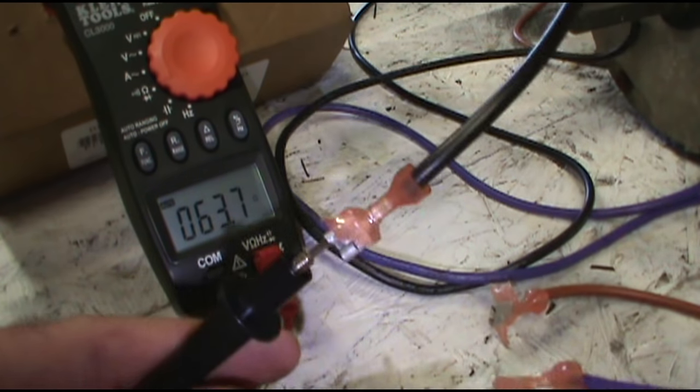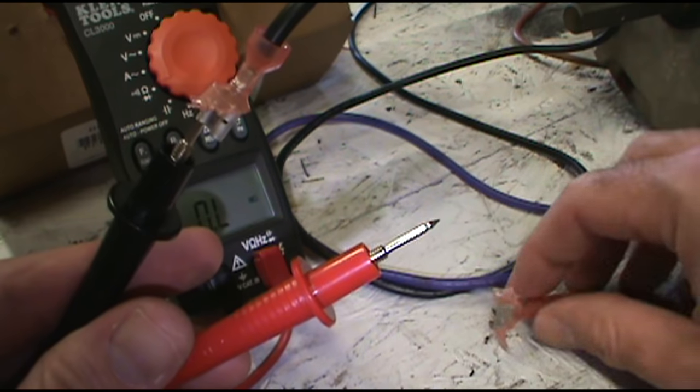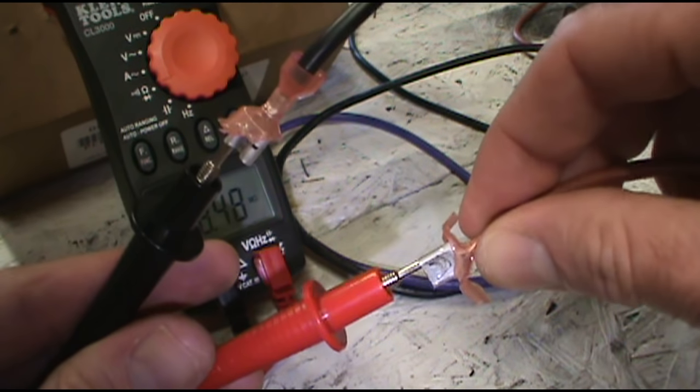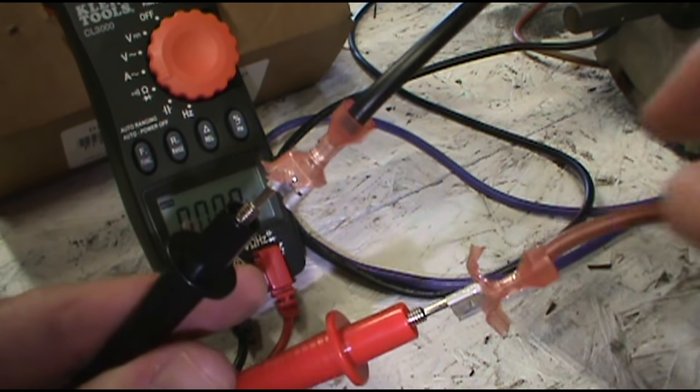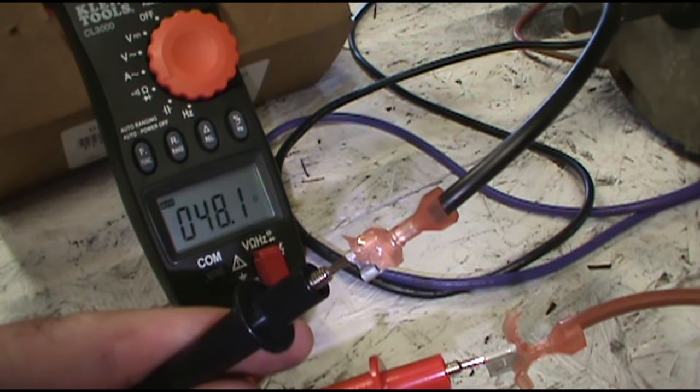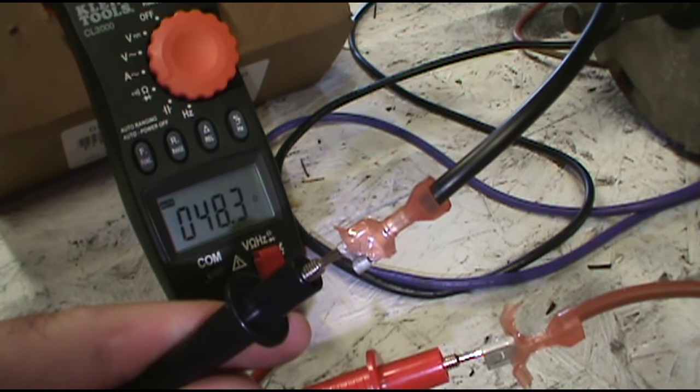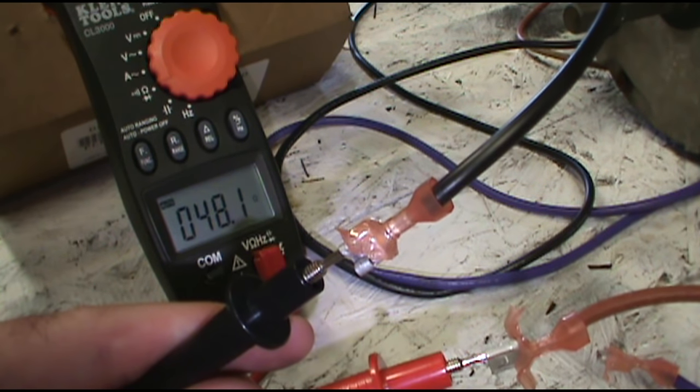You can leave the black in, pull the purple off the red, and then put the brown in. The brown wire that came off the capacitor, that'd be your start winding for your fan. So we got 48.1.